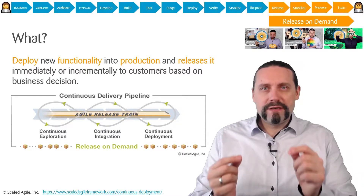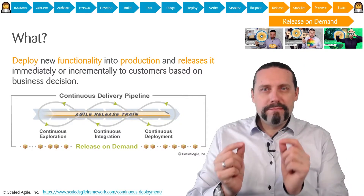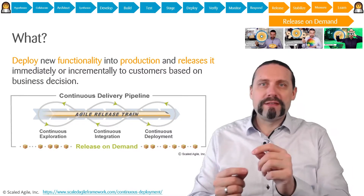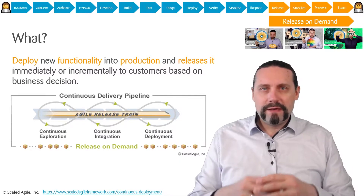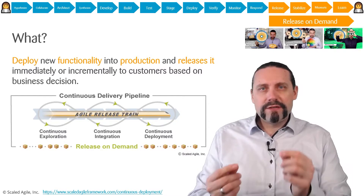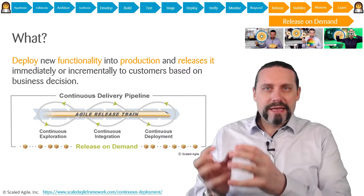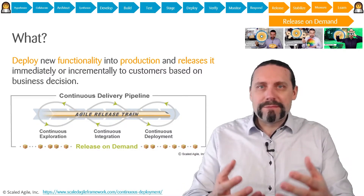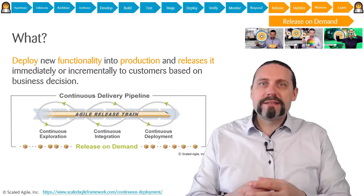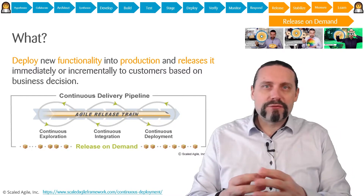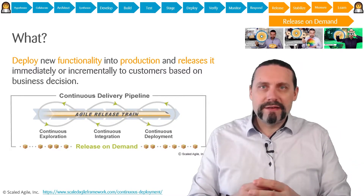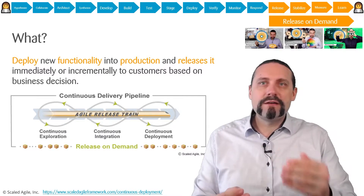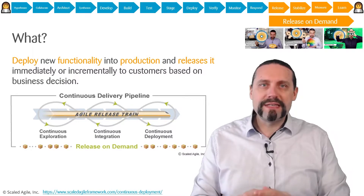After that, we architect the minimal amount of architecture needed to prove this hypothesis. Then in Synthesize we break down the epic into features, which we can bring onto a backlog, prioritize those features, and also create a roadmap and a vision. This concludes continuous exploration and we move into continuous integration.